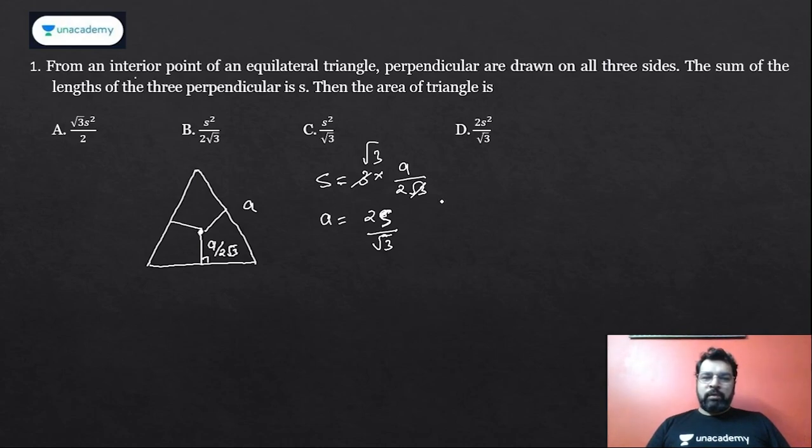Now what is the area of the triangle? Root 3 by 4 of a squared. So root 3 by 4 into a squared. The square of this will be 4s squared upon 3. Four cancels, this will be cancelled as root 3. Answer is s squared upon root 3, which is your answer.